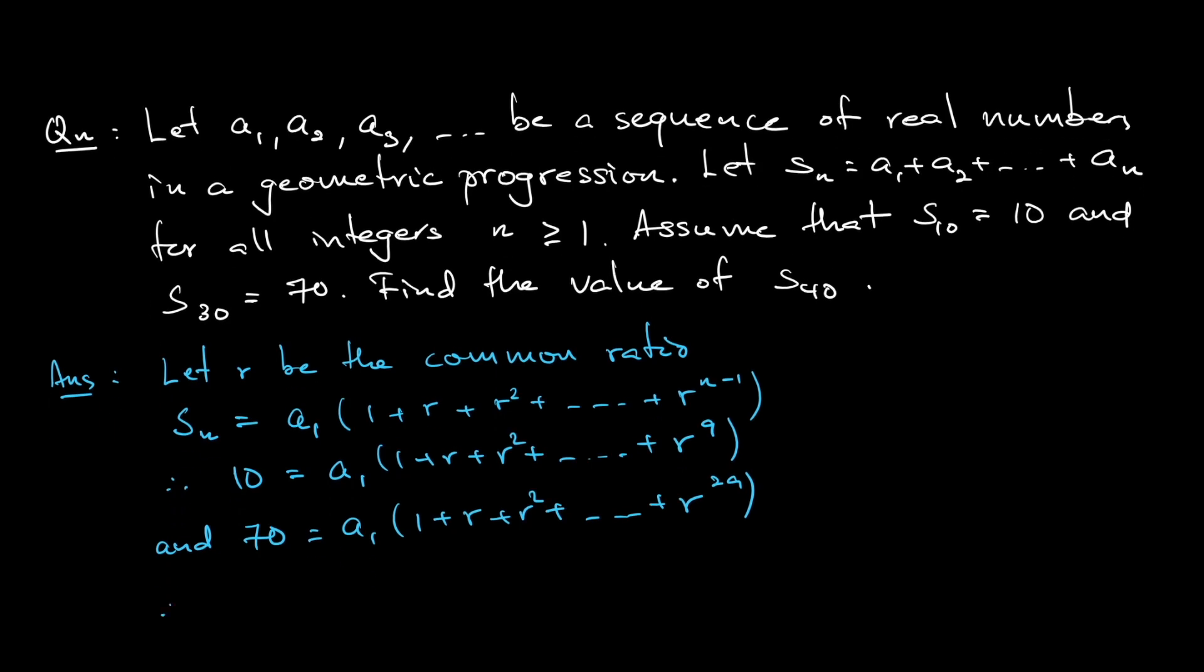So what do I have here? If I take 1 plus r plus r squared all the way until r to the power of 29, this in fact is, I can write it as a factor of 1 plus r all the way until to the power of 9, times 1 plus r to the power of 10 plus r to the power of 20.